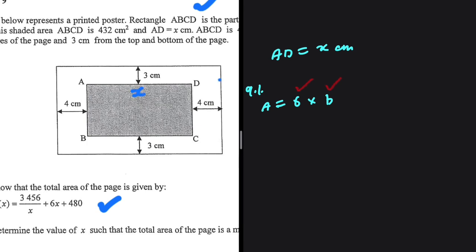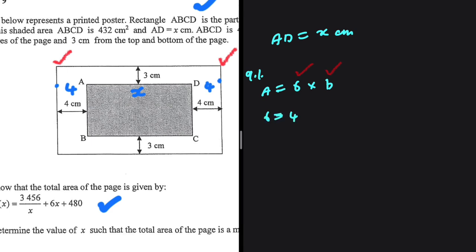From D to the edge we have 4 cm, and then from A to the edge we have 4 cm. It means that from this edge to this edge, let's call that our length. Our length is equals to 4 plus x plus 4, right? So the length will be 8 plus x.